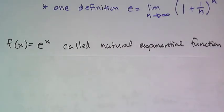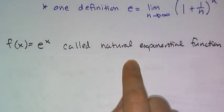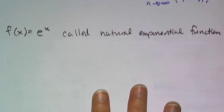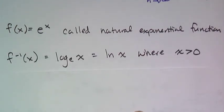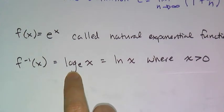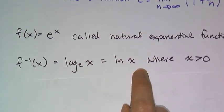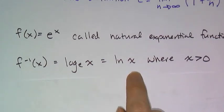Now when you use e as the base of an exponential function, we call that the natural exponential function. And its inverse, log base e, is never written log base e - it's written ln of x. So when you see ln of x, that means you are taking log base e of x.